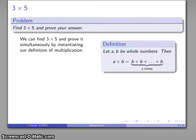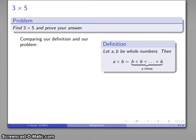We'll take a look at our definition of multiplication. Again, A times B is the sum of a whole bunch of B's, specifically A times, and in this particular case, we're going to compare what we have, 3 times 5, to our definition, A times B. And by that comparison, we see that A is 3, B is 5.